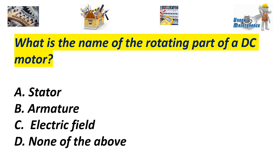What is the name of the rotating part of a DC motor? A. Stator. B. Armature. C. Electric field. D. None of the above. Answer B. Armature.